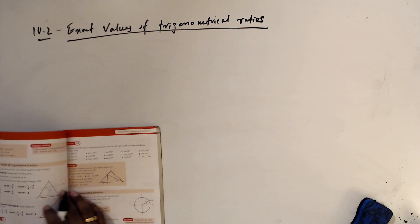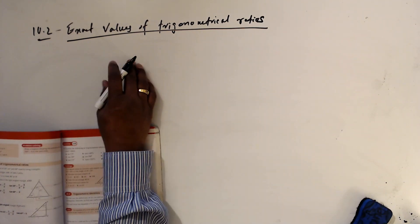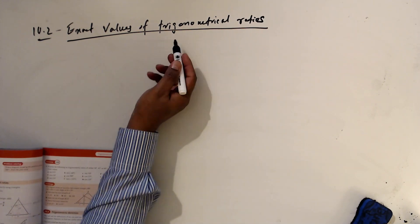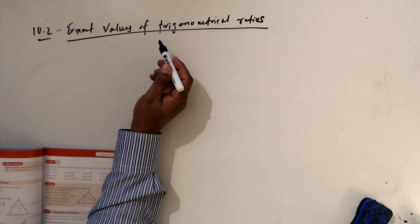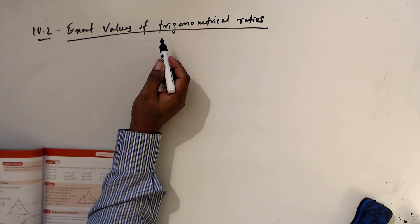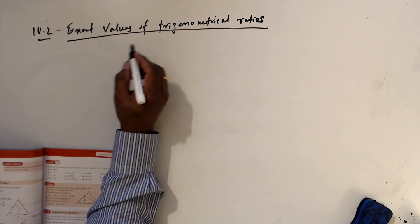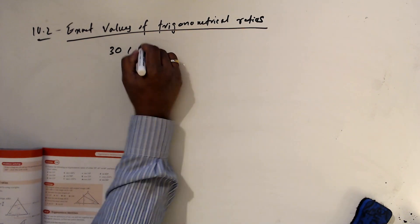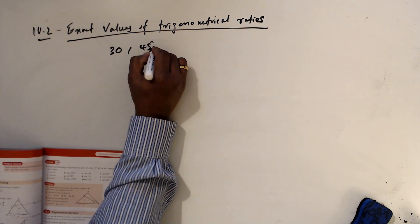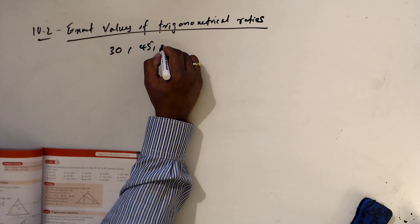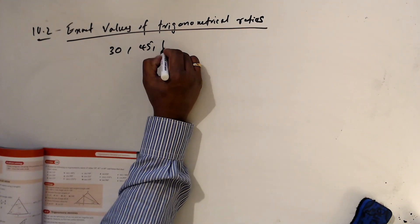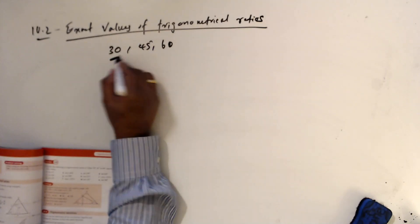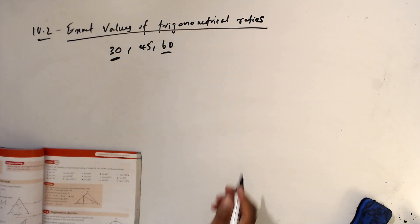In this section we are going to discuss the exact values of trigonometric ratios for some angles. We are looking at 30, 40, and 60. Initially we will discuss 30 and 60.